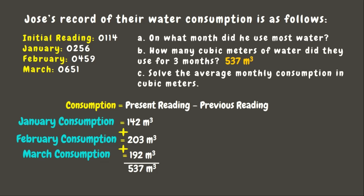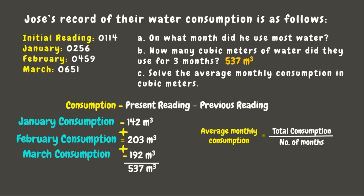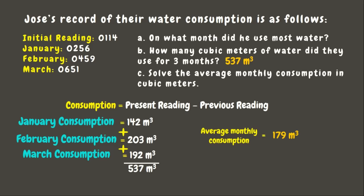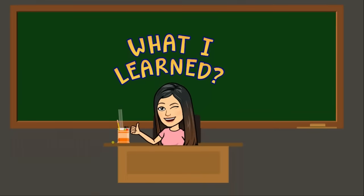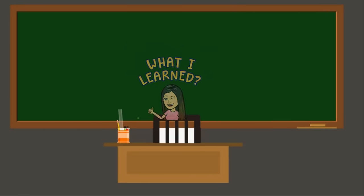For the last question, we solve for the average monthly consumption in cubic meters. To get the average, we divide the total consumption by the number of months: 537 cubic meters divided by 3 months equals 179 cubic meters. That's the average monthly consumption. You made it this far — here are the things that you learned today.